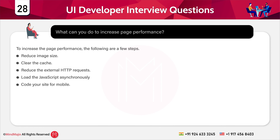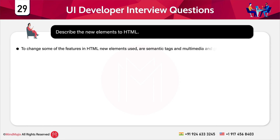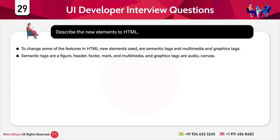The next question is: describe the new elements in HTML5. New elements added include semantic tags and multimedia and graphic tags. Semantic tags include figure, header, footer, and mark, while multimedia and graphic tags include audio and canvas.